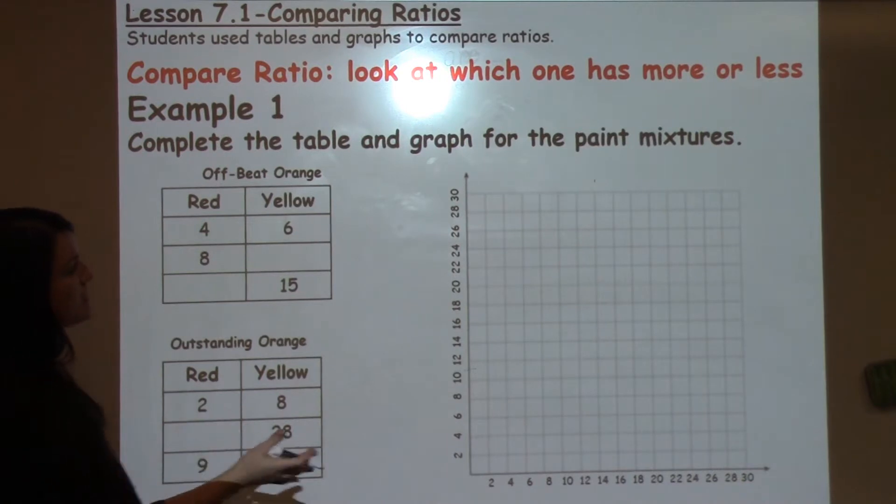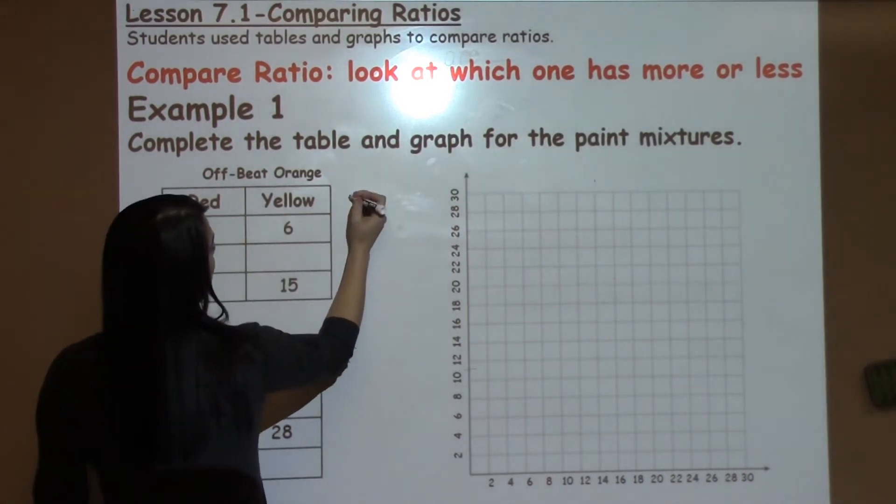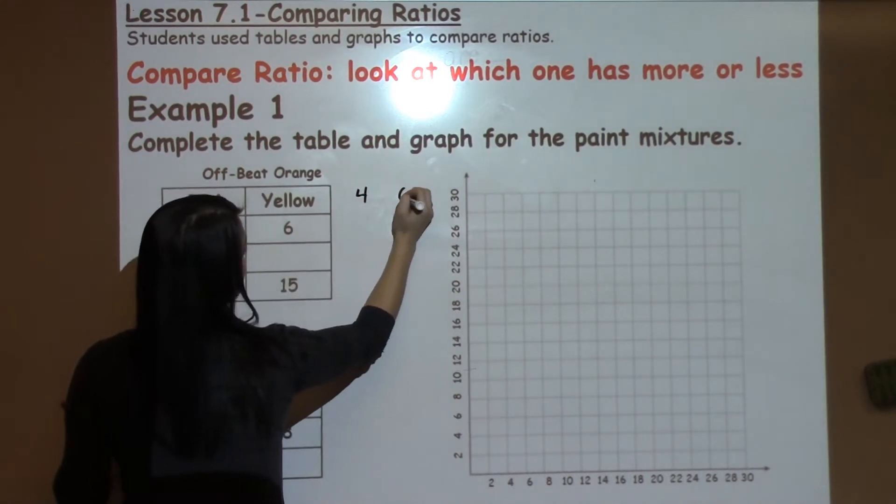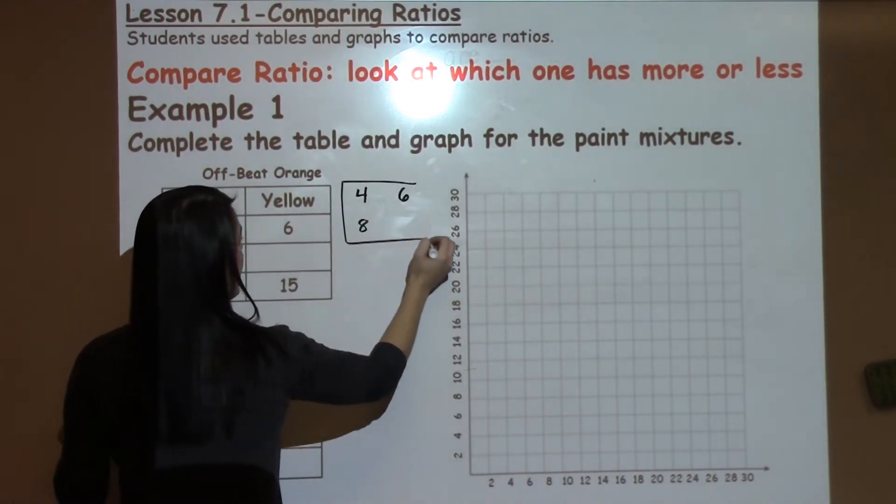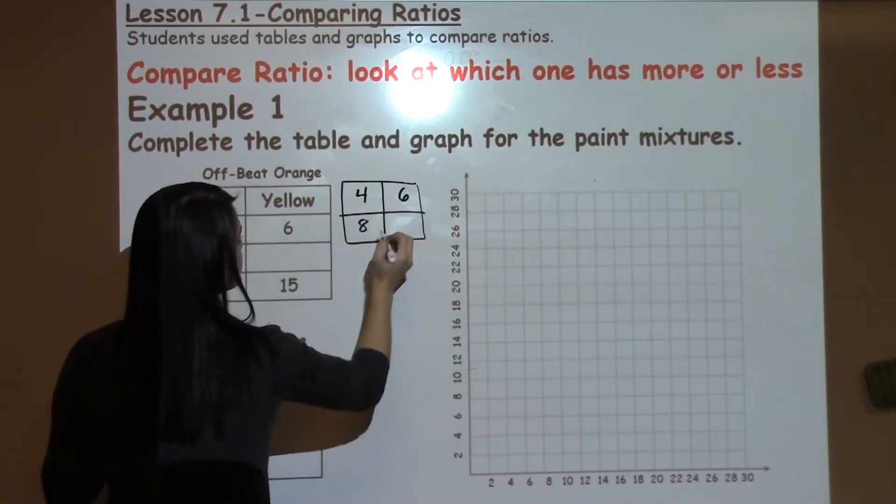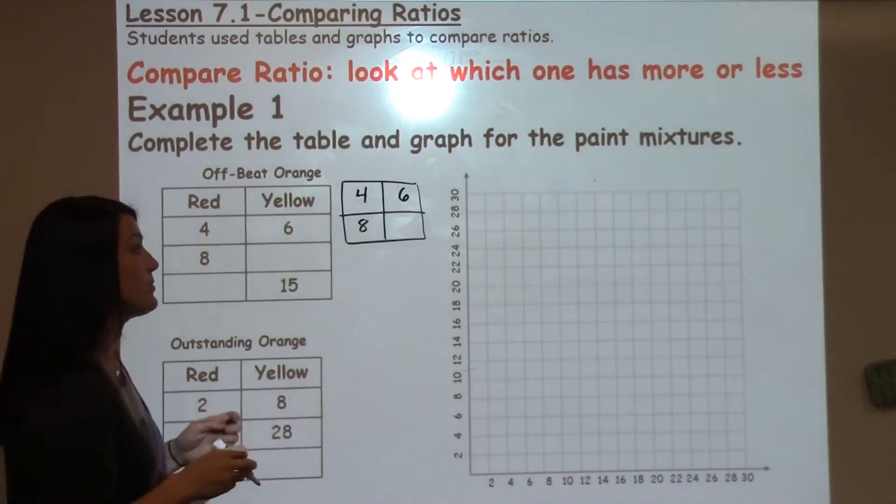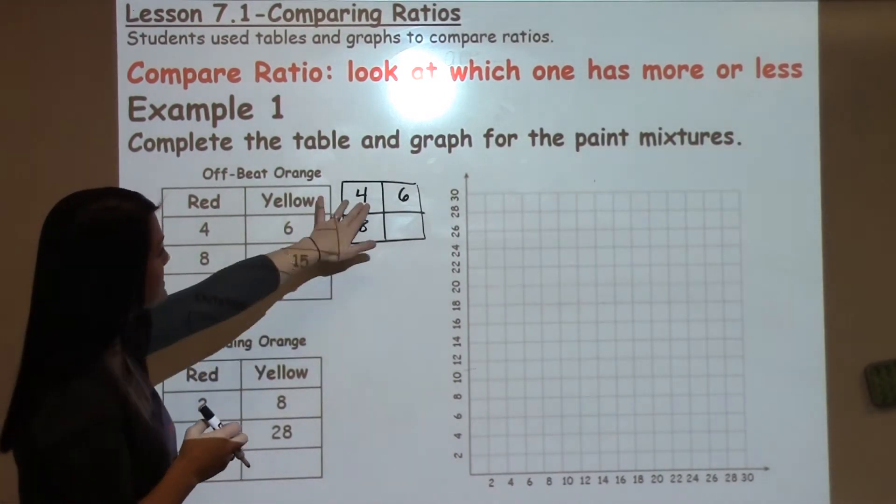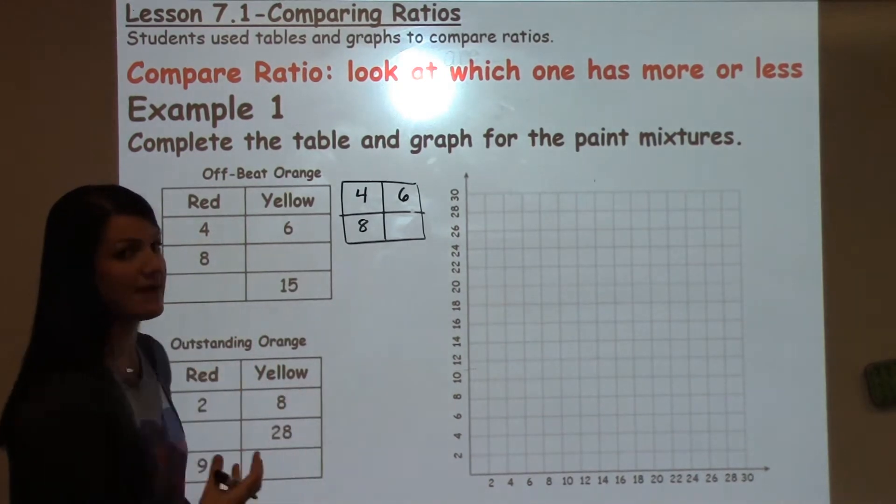What we're going to do to help us with these ratios is create a factor puzzle. I'm going to pull out the information that I have so it's a little bit easier to work with. This is a review from Unit 1 when we looked at different factor puzzles and we looked at the numbers that we have next to each other and thought about what factor do they have in common.